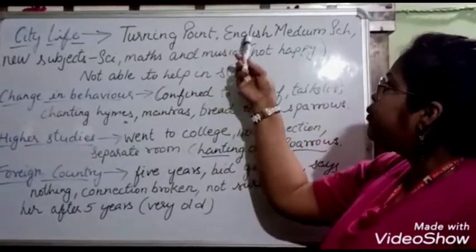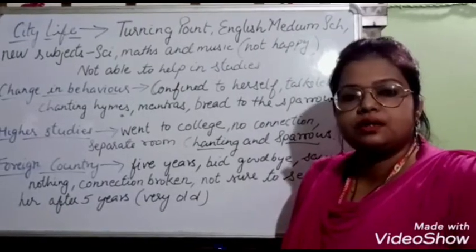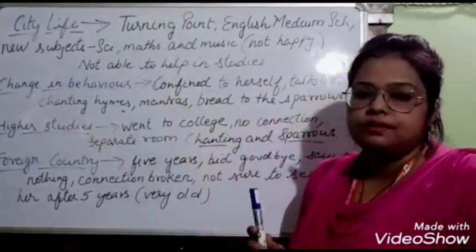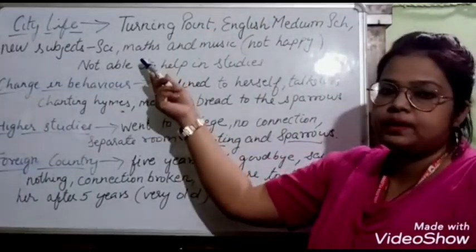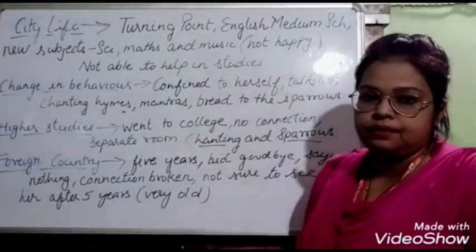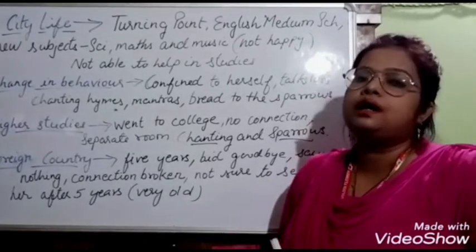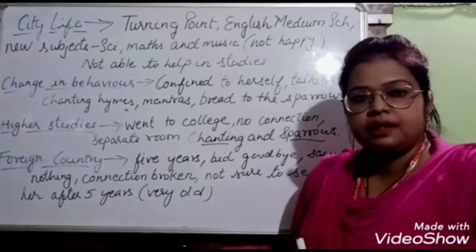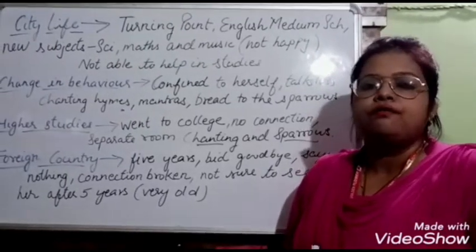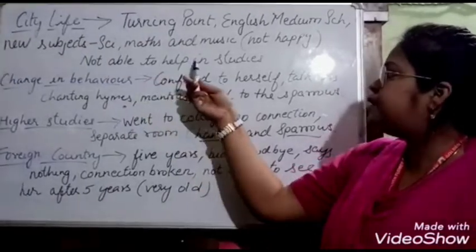In the city, the writer went to an English medium school. Previously, he had studied in a religious school in the temple, reading religious scriptures. But now there were new subjects — science, mathematics, and also music. The grandmother was not at all happy because she didn't know anything about these new subjects and was no longer able to help the writer with his schoolwork. She also did not like that music was taught, as according to her, music was not appropriate for people of higher classes.